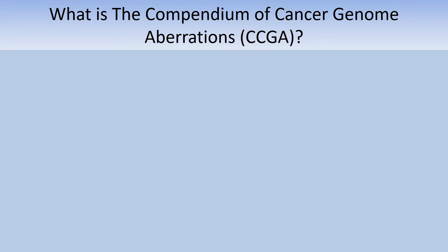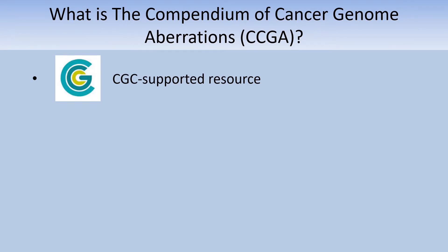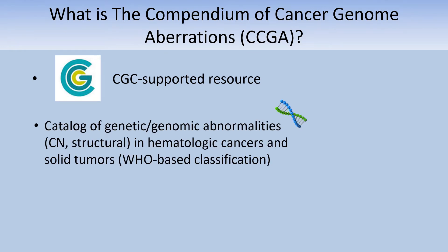What is the CCGA? It's a CGC-supported resource. While there are excellent websites out there to evaluate small variants like point mutations and indels, the CCGA is targeted to provide a resource for interpreting cancer cases with particular emphasis on copy number and structural rearrangements. This content is structured based on the current WHO classifications, which means that it's presented in the way our community interprets these cases.